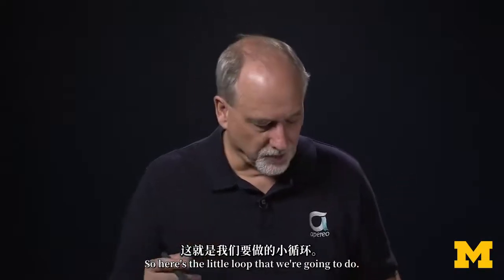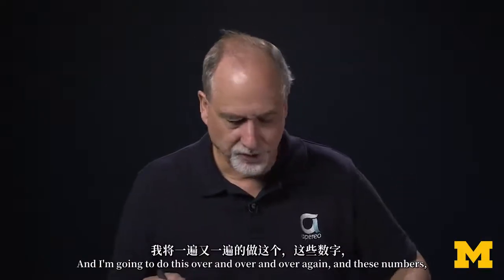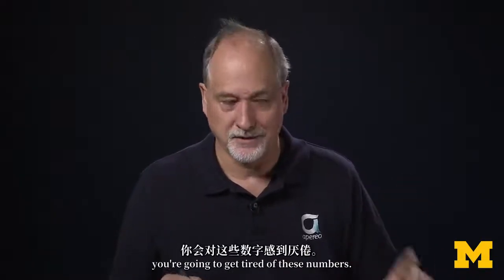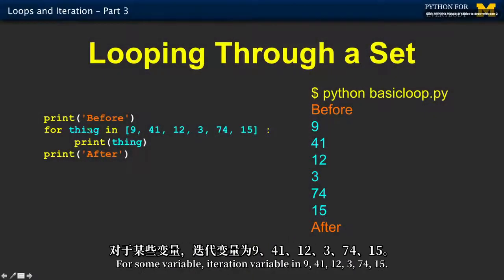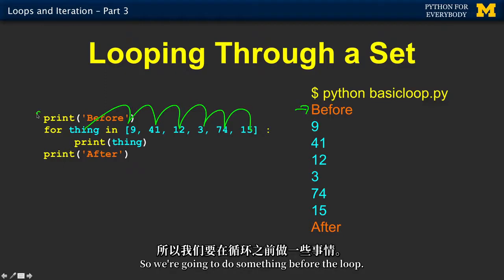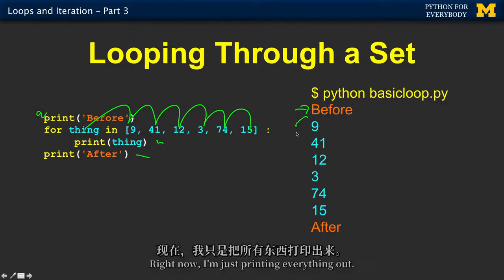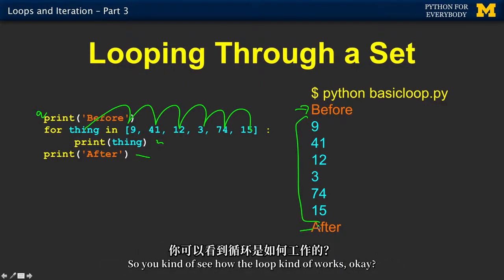Here's the little loop that we're going to do over and over again — you're going to get tired of these numbers. For some iteration variable in 9, 41, 12, 3, 74, 15 — we print it out before. So we're going to do something before the loop, something during the loop, and something after the loop. Right now I'm just printing everything out so you can see how the loop works.